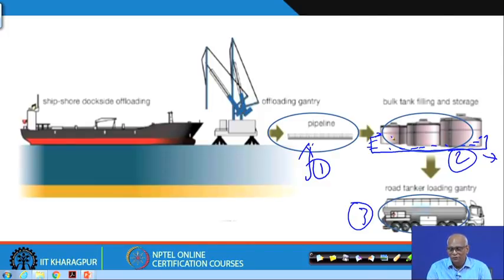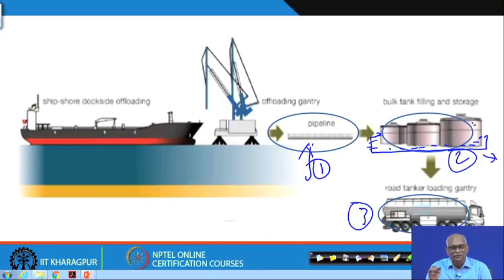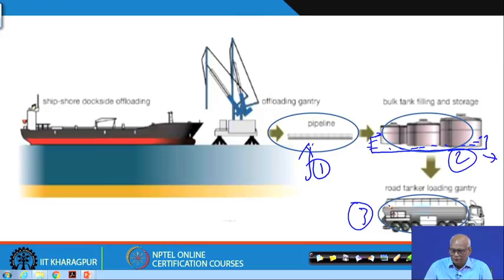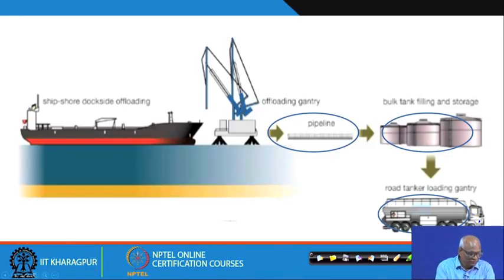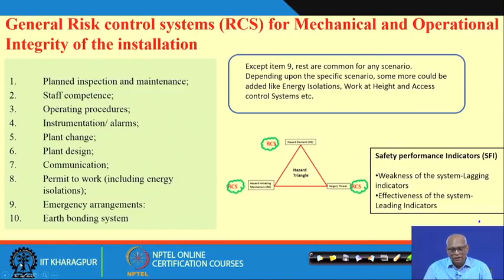That is one of the requirements when you are storing hazardous materials. This bund is also very important. If this also breaks, the material will go to the community. The bulk tank is associated with this bund, and then the road tanker — road tankers come daily, get loaded, and take it away. So these three are the hazards, but understand that the hazard itself will not give you clarity.